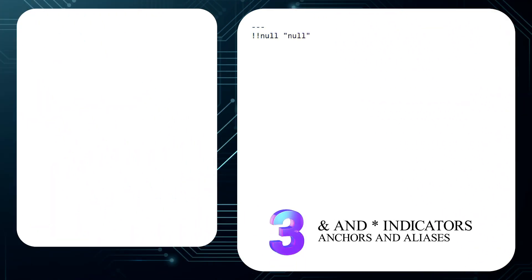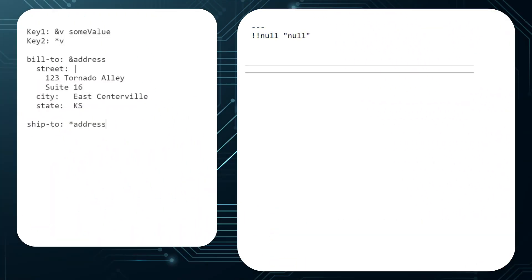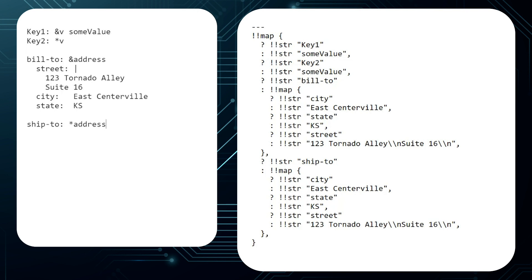Number 3: YAML supports anchors and aliases. This prevents you from having to repeat the same value over and over again. An anchor is an ampersand followed by a label, followed by a space and the value you want to reuse. When you want to use the value, type asterisk and the label. When the YAML is processed, all aliases will be replaced with the actual values. This allows you to change the value in one place and have the change propagate through the entire document.